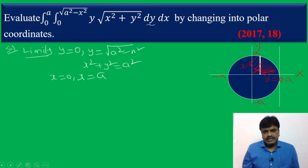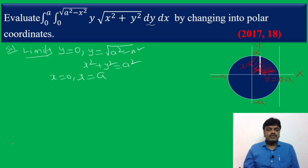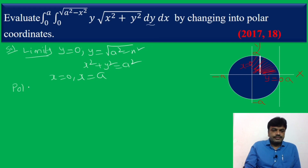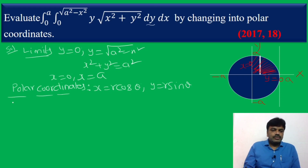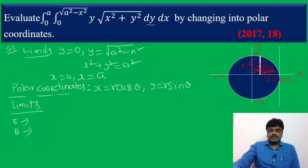Changing into polar coordinates: x = r cosθ and y = r sinθ. We need to find the limits for r and θ by converting the region into polar coordinates. We draw a wedge in the first quadrant.